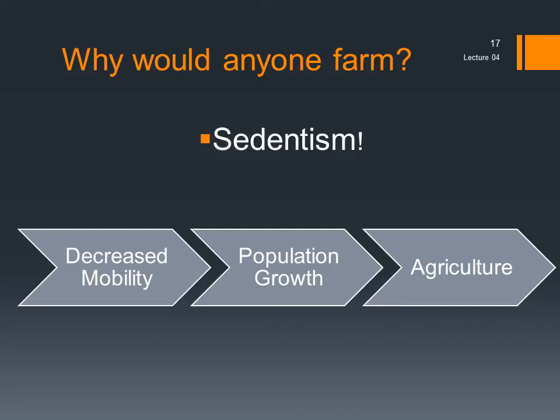So why would anyone ever become a farmer? It's all related to increased sedentism and decreased mobility. For a variety of reasons, being a nomadic hunter-gatherer strictly limits human populations, even when there is plenty of food available in the natural environment. These biological constraints are lifted, however, when humans stop moving around so much, as was happening in the eastern woodlands during the Archaic. So once people become sedentary, population densities begin to rise, which we also see during the late Archaic, and this rise in population density sets in motion a sequence of events that ends in agriculture.